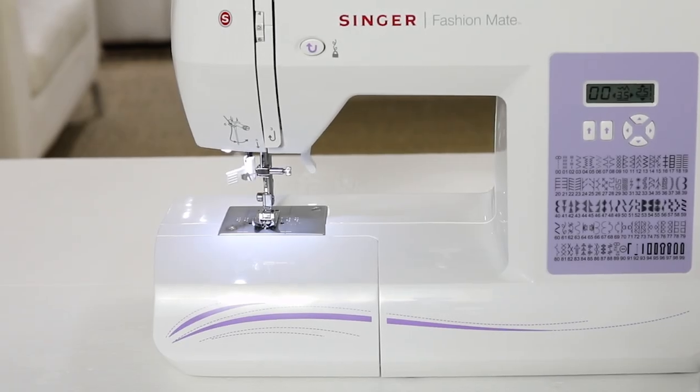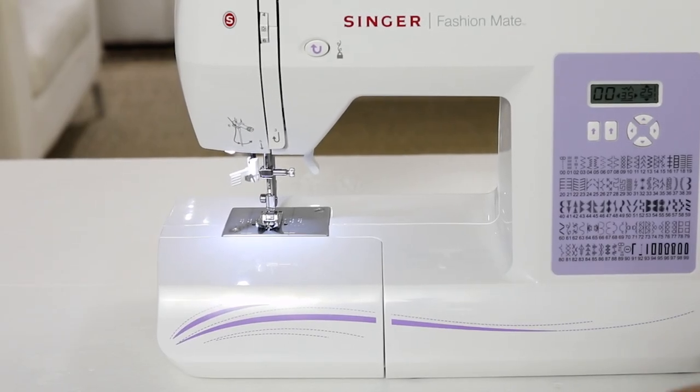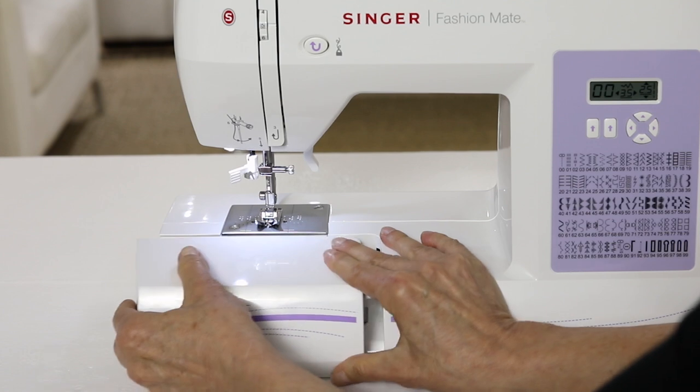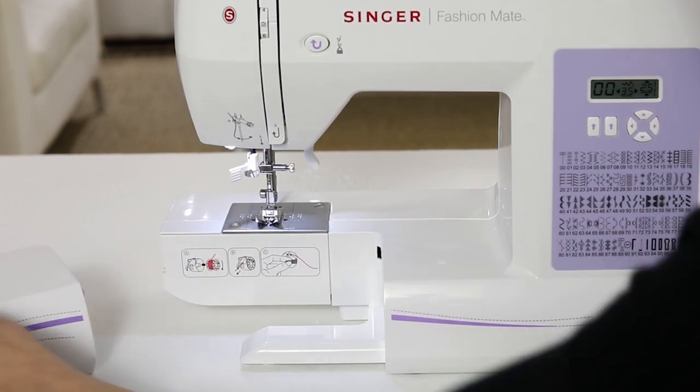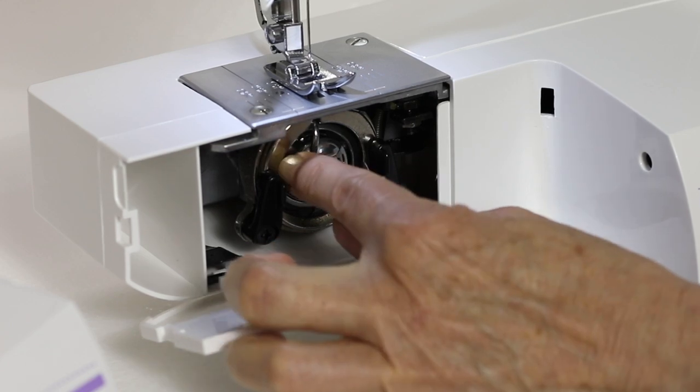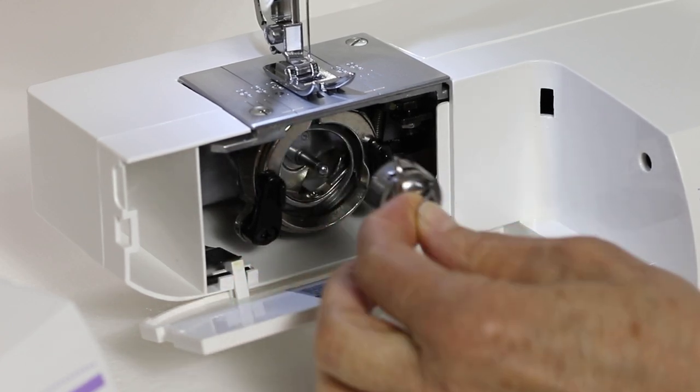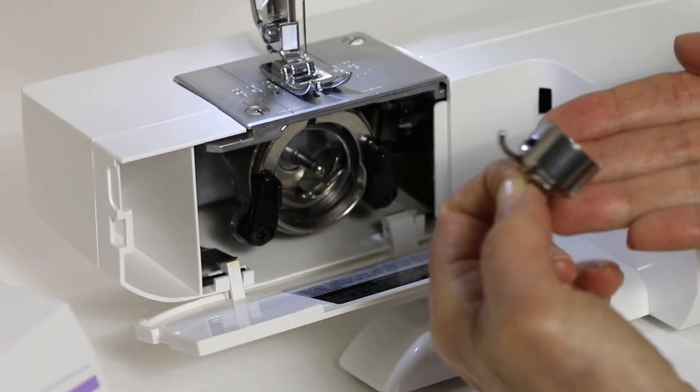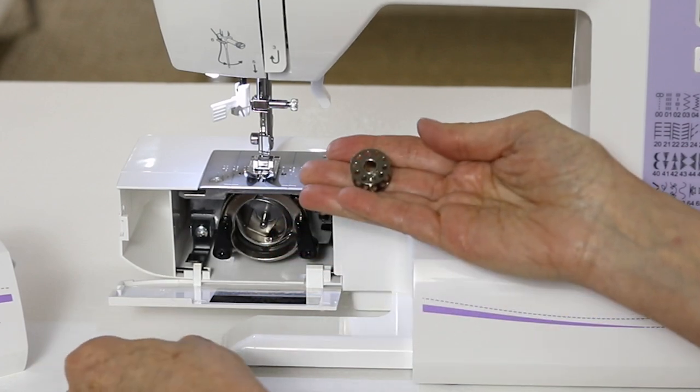To thread our machine we need to first wind a bobbin. To retrieve your empty bobbin, first take off the removable storage compartment, open this front cover, pull this latch to remove the bobbin case, and inside the bobbin case you'll find your empty bobbin.